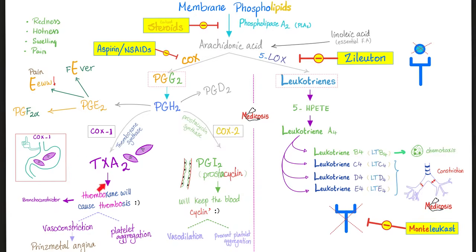Thromboxane A2 wants you to clot by constricting the vessels and helping with platelet aggregation, making you more likely to clot. On a deep biochemical level, thromboxane A2 is responsible for Prinzmetal angina — the angina that is caused by constriction and spasms of the coronary artery. To learn more about coronary arteries, see my cardiology playlist. Prostacyclin is anti-thrombosis — it causes vasodilation and prevents platelet aggregation, making you less likely to clot.